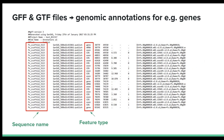The GFF (General Feature Format) and GTF (General Transfer Format) are both tab-delimited text files used to represent genomic annotations such as coordinates for genes, transcripts, and other genomic features. Each line in a GFF file represents a feature or annotation on a genomic sequence. The fields typically include data such as the sequence identifier, feature type (for example, gene or exon), start and end coordinates, strand, and other information. GTF files are specialized forms of GFF files that are specifically designed for gene annotation.